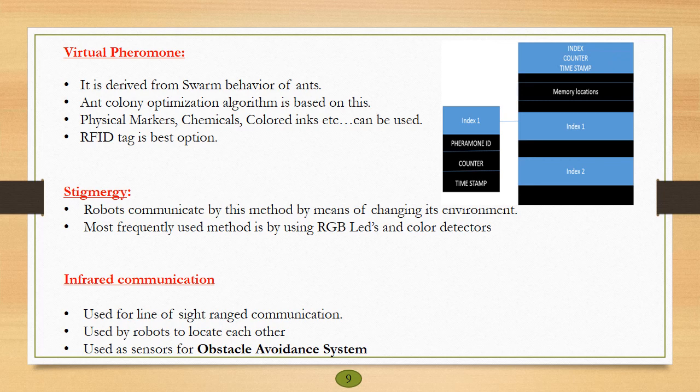The other method you see is stigmergy. In this method, the robots actually change their environment to communicate with each other. The most frequent method used is RGB LEDs. These robots form some kind of color patterns, and the meaning of each color pattern will be stored or pre-programmed in these robots.